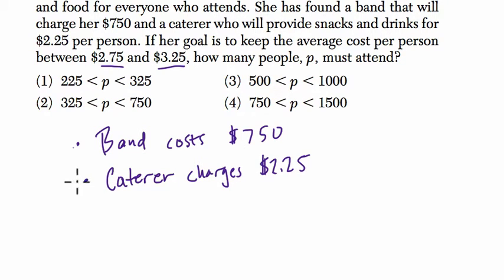How do you keep the average cost low? Well, you have more people show up. Because no matter how many people show up, if you have 50,000 people showing up, the band still only costs $750.